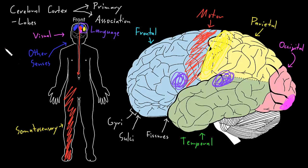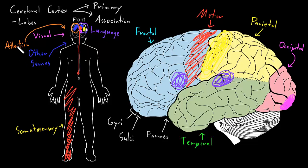Another important function of the cerebral cortex is attention. Areas on both sides play a role, but in most people, the right cerebral hemisphere pays attention to both sides of the body and the environment, whereas the left hemisphere tends to predominantly attend to the right side. So the right hemisphere carries additional attention functions not found in the left hemisphere in most people.